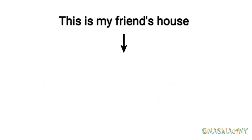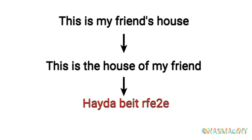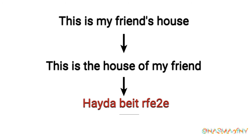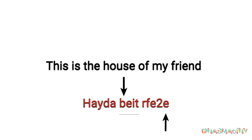Another example: this is my friend's house. Put it in the 'of' form: this is the house of my friend. Ask yourself: what's my first noun? House, which is bayt — and that's masculine. That's why I said hayda bayt rafi'i. Look at your second noun — you will see that the second noun took 'my.'